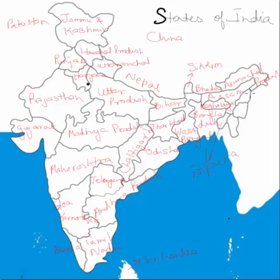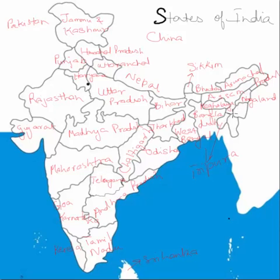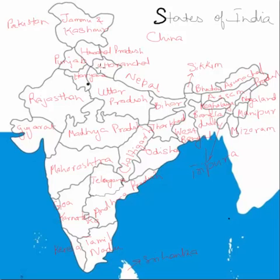We're left with three states, and they're easy to remember: one starts with N and two start with M. The northernmost one starting with N is Nagaland. The boxy, square-shaped state is Manipur. The one that borders Bangladesh to the west and Myanmar to the east is Mizoram. We have now named all the states in the country — it's not at all hard to remember!